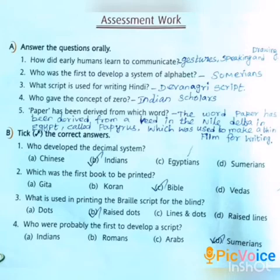Third question: What is used in printing the Braille script? Options: A. Dots, B. Raised Dots, C. Lines and Dots, D. Raised Lines. Answer: Option B, Raised Dots.